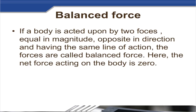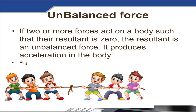Unbalanced force: if two or more forces act on a body such that their resultant is not zero, the resultant is an unbalanced force and it produces acceleration in the body. For example, in a tug of war, when one team pulls with more force, the rope moves in the direction of the higher force — this is unbalanced force.